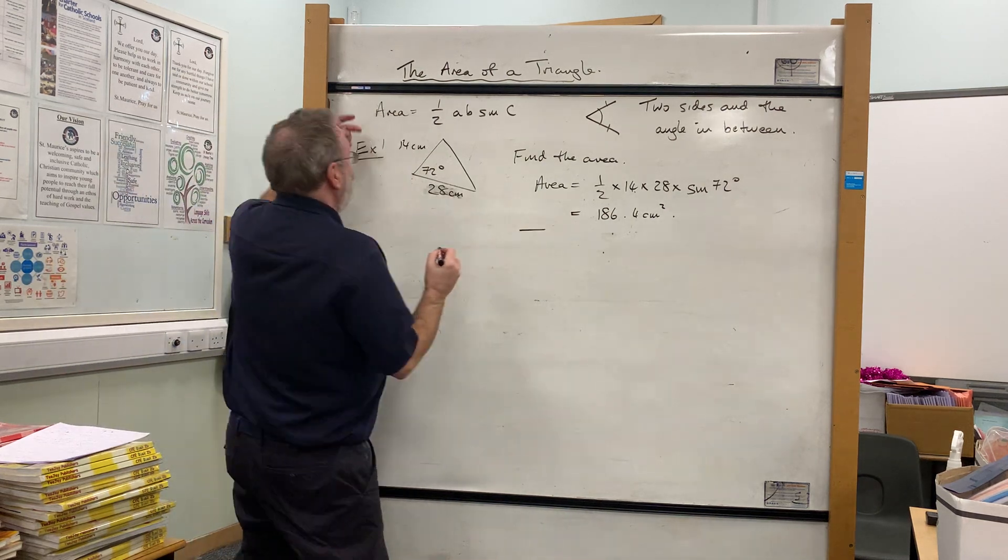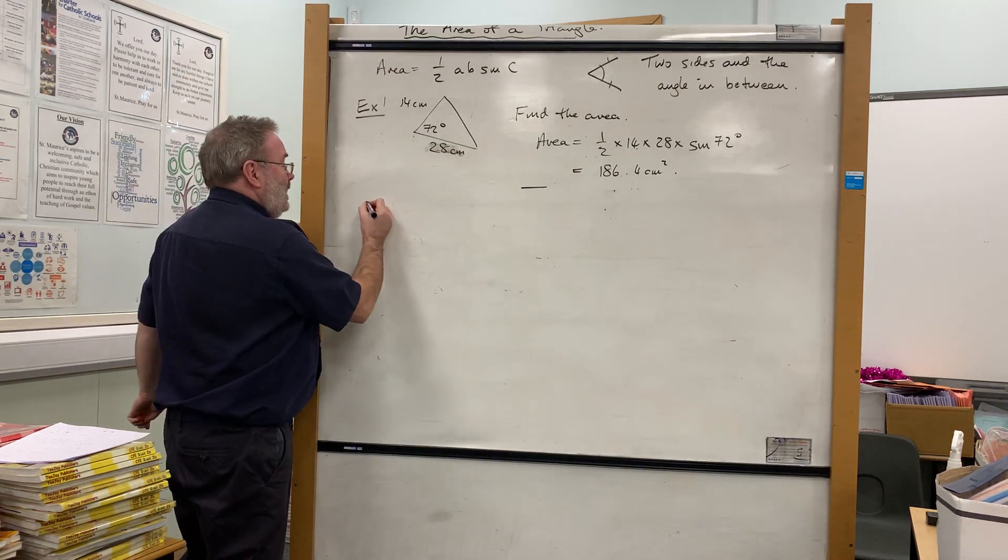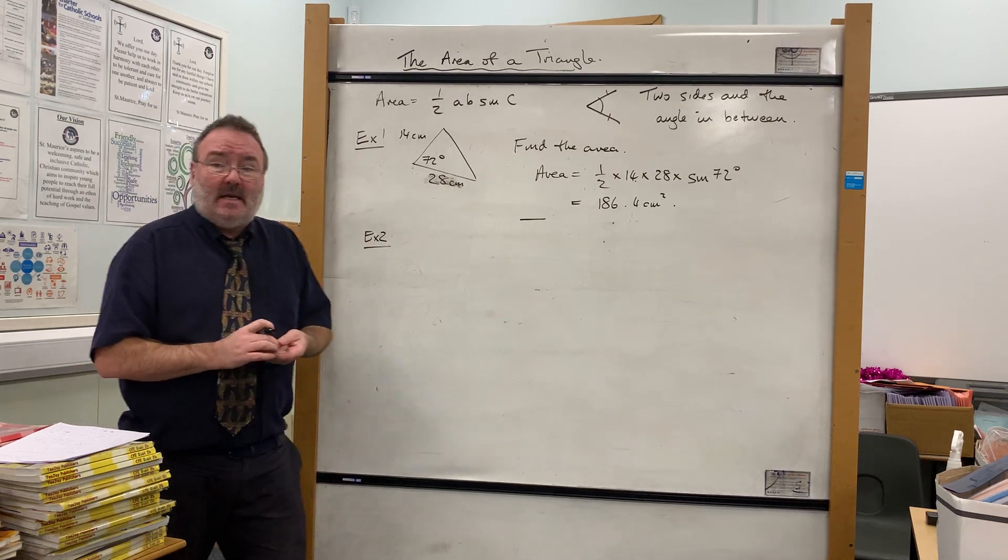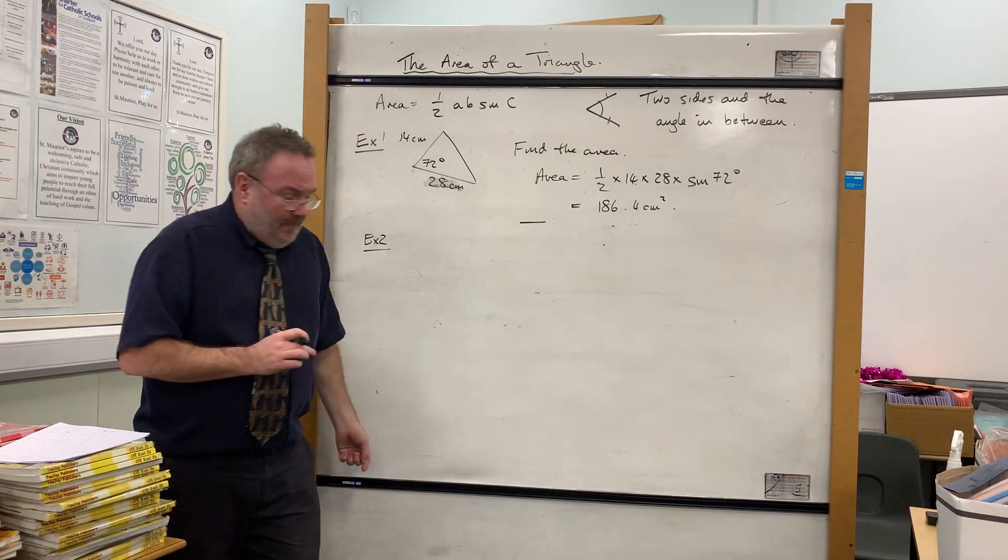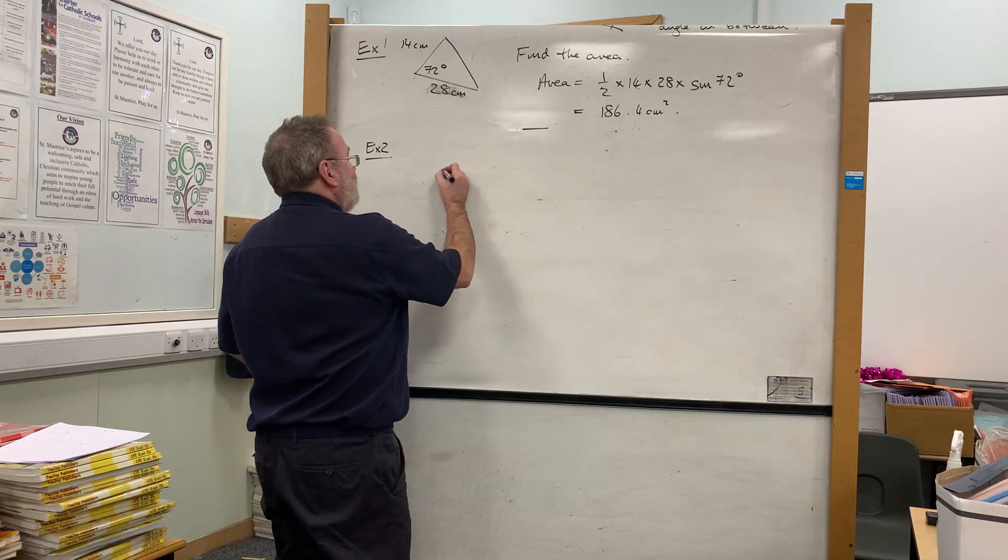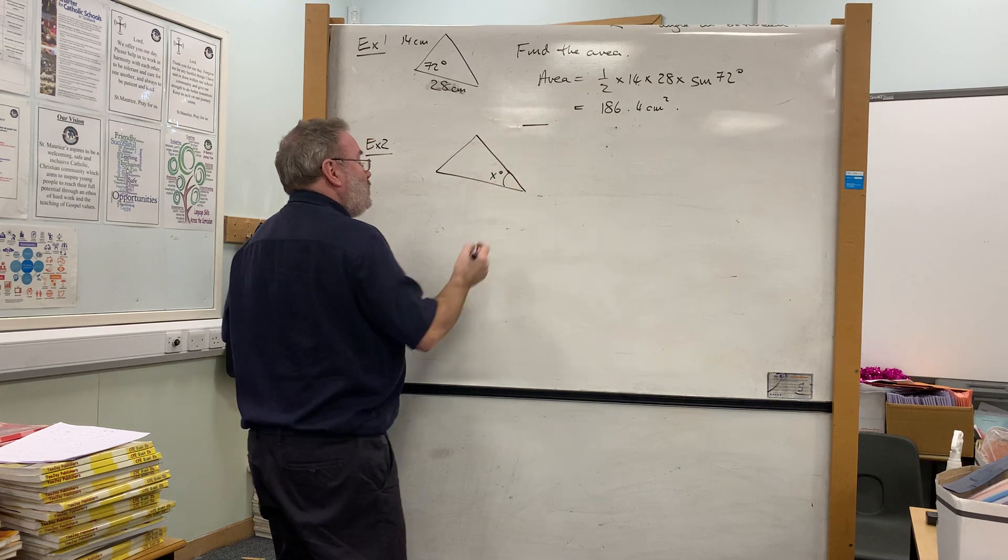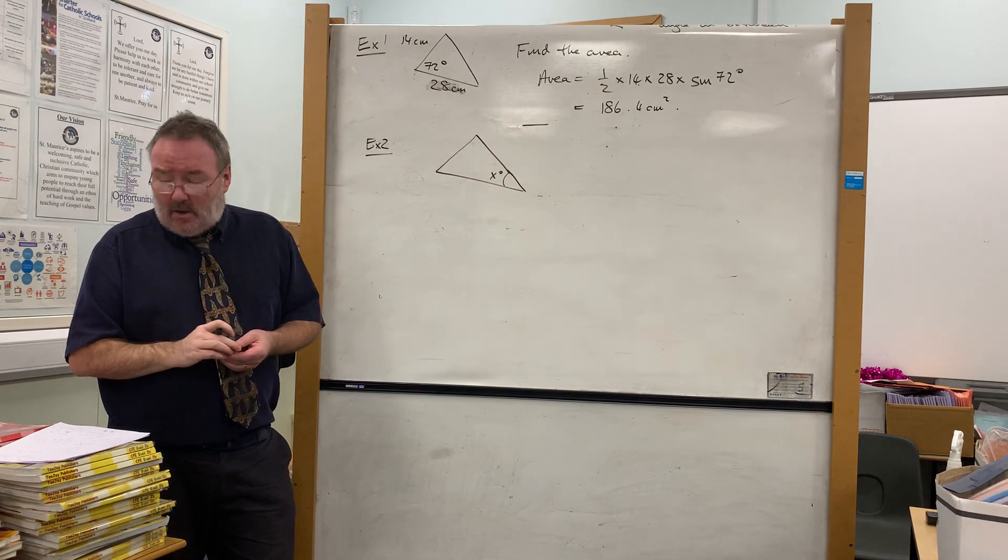Now the second thing we're going to look at is slightly trickier and therefore more likely to be an exam question. Now this time, if we take a triangle, we are going to have an unknown angle.